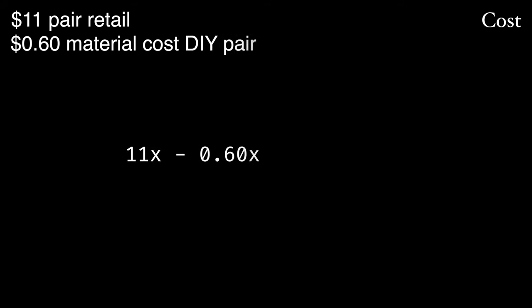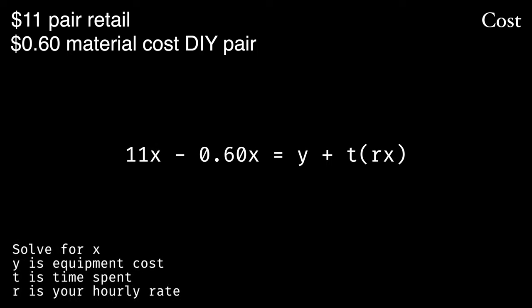Let's talk about cost. First, we'll assume that a retail pair of sticks is about $11. The wood for your sticks costs about 60 cents per pair of sticks. Then we'll put together a formula where Y is the cost of equipment, T is the time spent per stick, and R is your hourly rate, or how much your time is worth. We solve for X, and that tells us how many sticks we need to make before we come out on top and have achieved ultimate value.